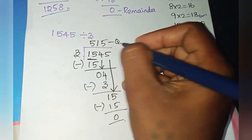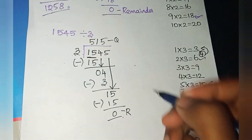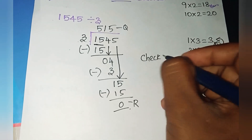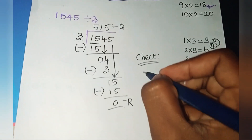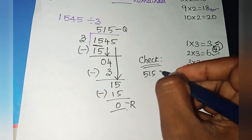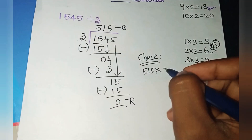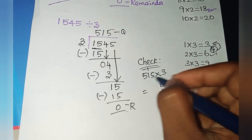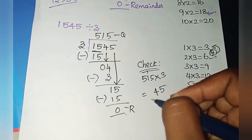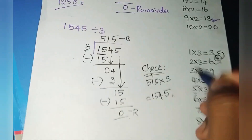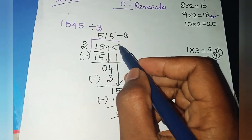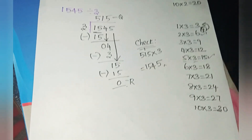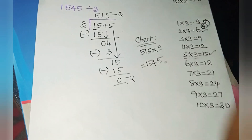We get the answer. The remainder is 0. For checking, if you want to verify your answer is correct, you can multiply. The answer is 515. 5 into 3 is 15, carry 1. 3 into 3 plus 1 is 4. 5 threes are 15. We get 1545. Our answer is correct. In the next video, we will see the type 3 sums. Thank you.